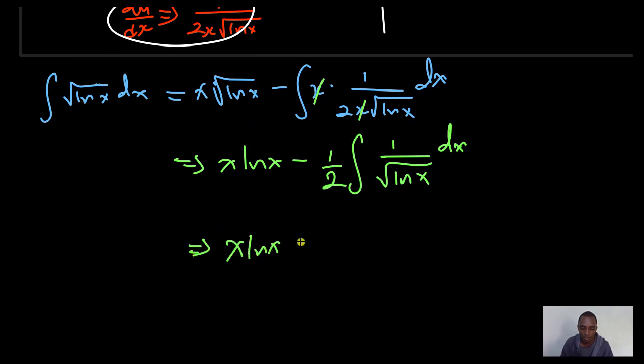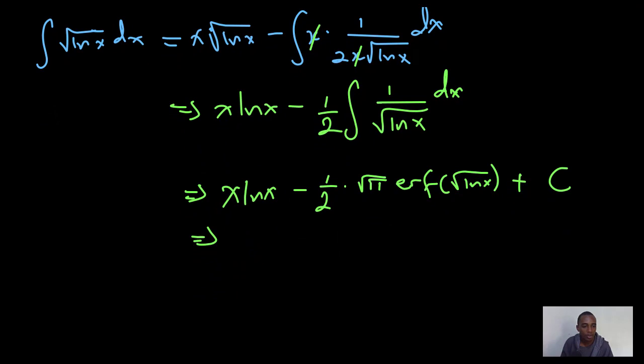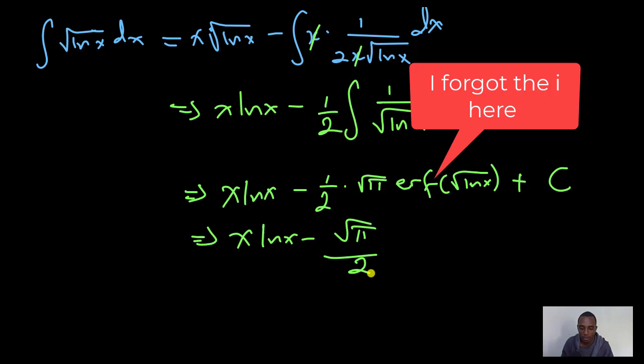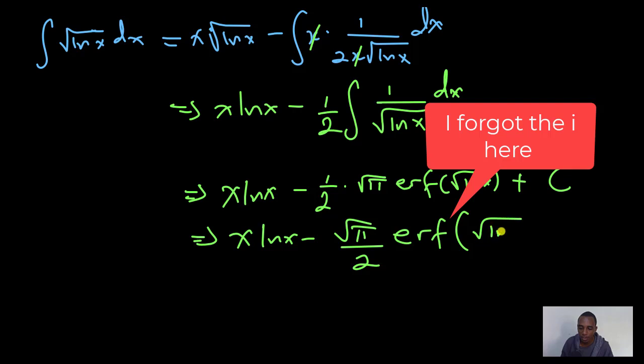x times the natural log of x minus 1 half. That's going to be 1 half all this, we've evaluated this to be the square root of pi times the imaginary error function of the square root of ln x plus an arbitrary constant. Just to clean this up a little, that's going to be x times ln x minus root pi over 2 times the imaginary error function of the square root of ln x plus a constant. That's our final solution.